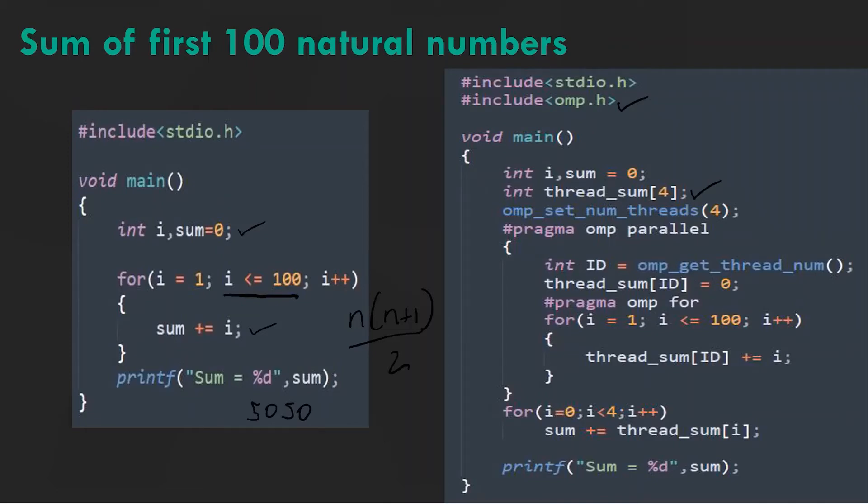You can picture the serial program splitting into four blocks running in parallel from this point. Each parallel block is running on its own thread. First we use omp_get_thread_num to get and store the thread ID into a variable called id.